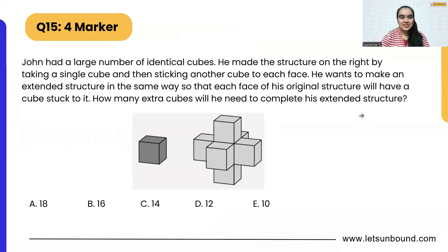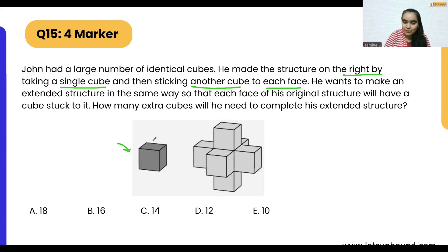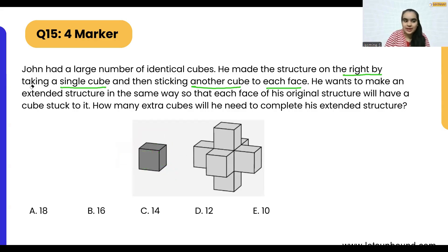The question is: John had a large number of identical cubes. He made a structure by taking a single cube and then sticking another cube to each face. So he starts with one cube and attaches cubes to all six faces — giving six extra cubes, since one cube has six faces.